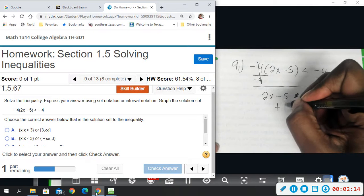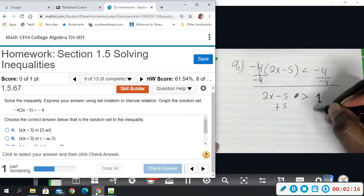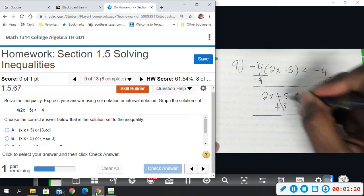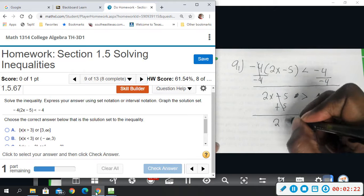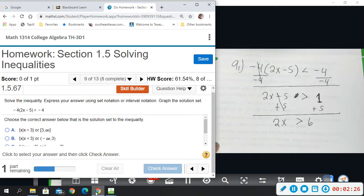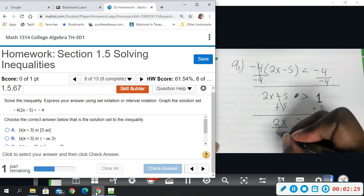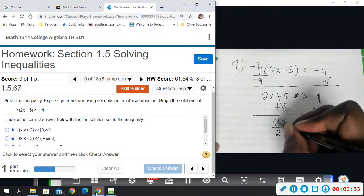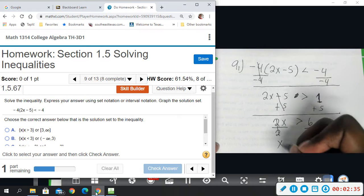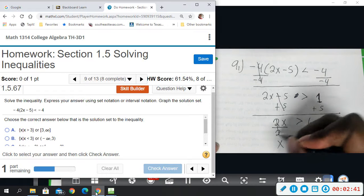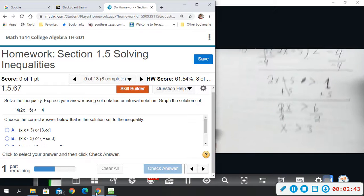So when we do that, now we add 5 to both sides. That goes to 0. Bring down 2x, greater than 5 plus 1 is 6. And divide by 2. Here we go. We're dividing, but it's positive, so we don't have to change the signs. Divide by 2, that's 1, so we just have x is greater than 3.